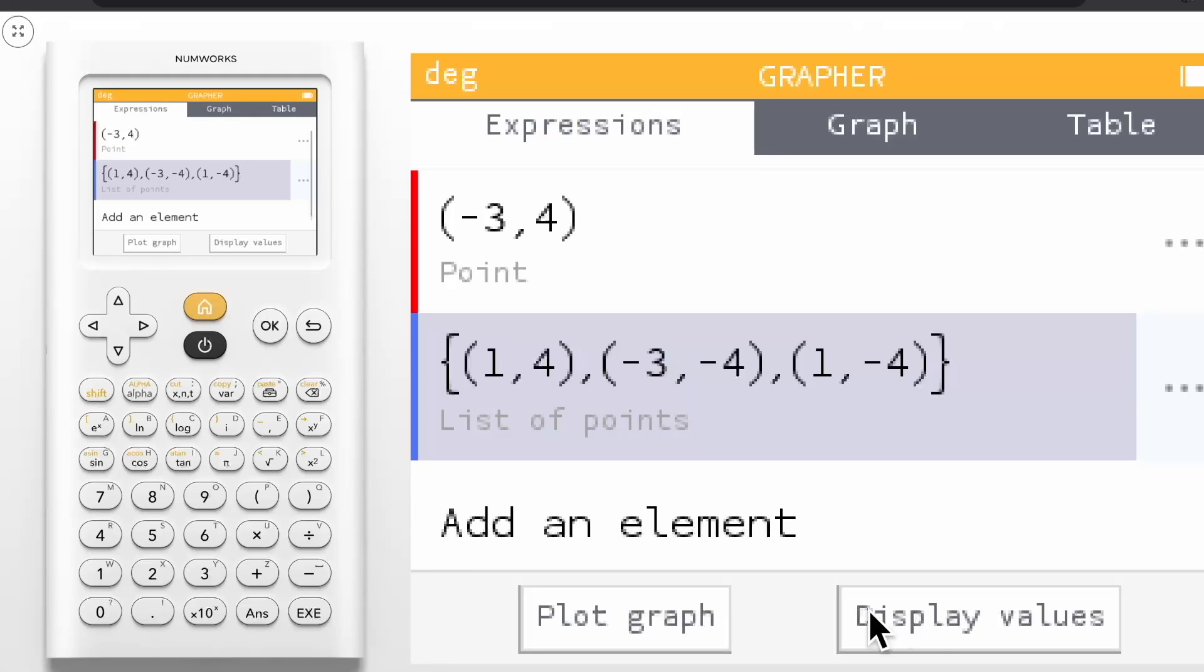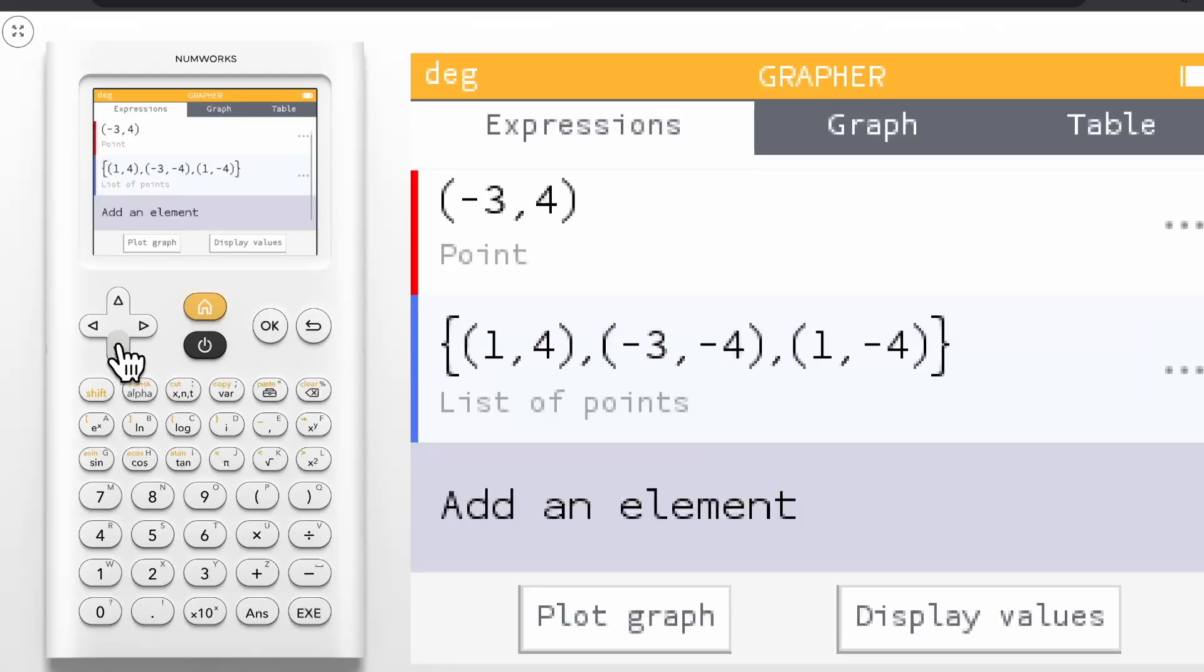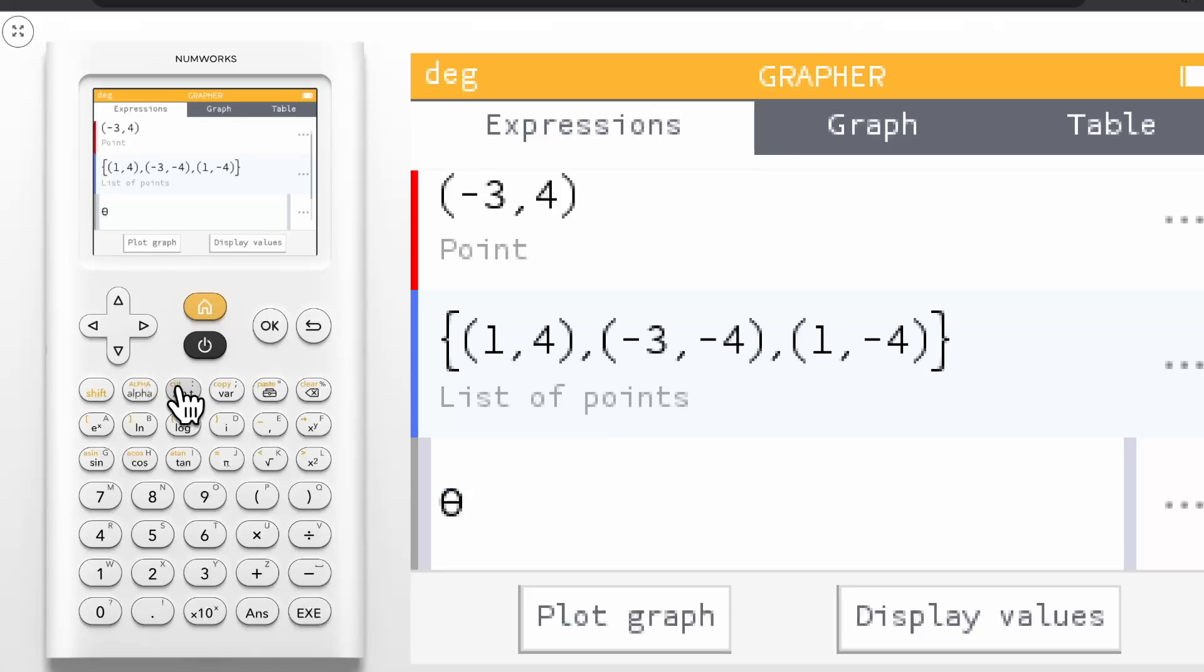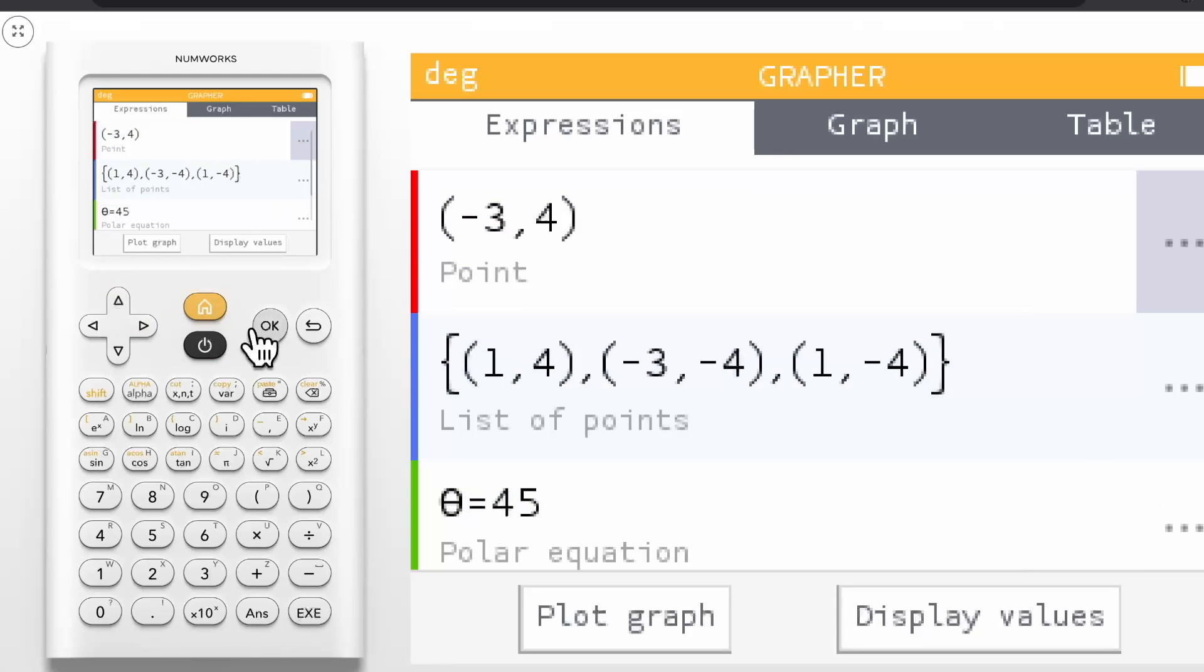In addition to supporting points, we've also added the ability to support polar equations in the form of theta equals, which allows you to graph lines in polar form. Let's add the polar line theta equals 45 degrees. Navigate down to add an element. We don't have a template for this, but you can access the theta sign by pressing the X, N, T key four times. Then input the equal sign by doing shift, pi, and lastly the angle of your choice, in this case 45. I don't need R for this expression, but you could add it by doing alpha 4. Now that we have these three expressions typed in, let's go look at the options we have available for them. Navigate to the three dots and press OK.